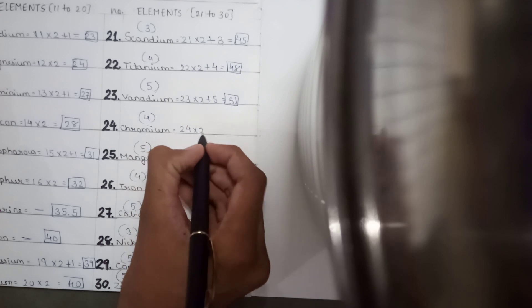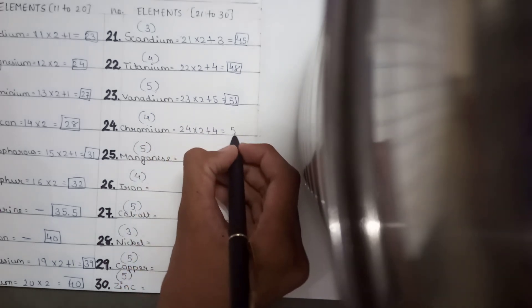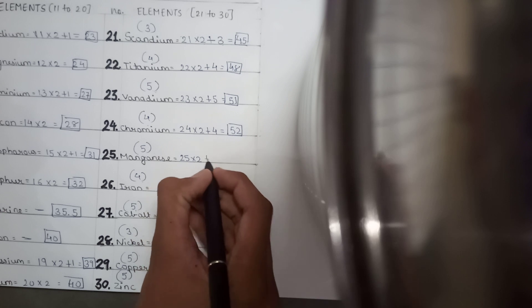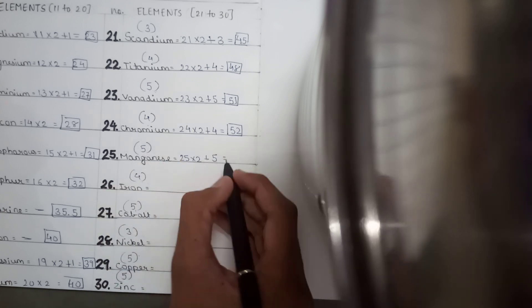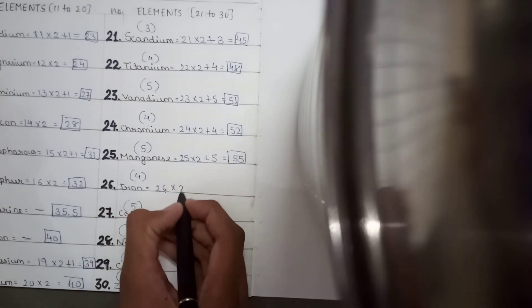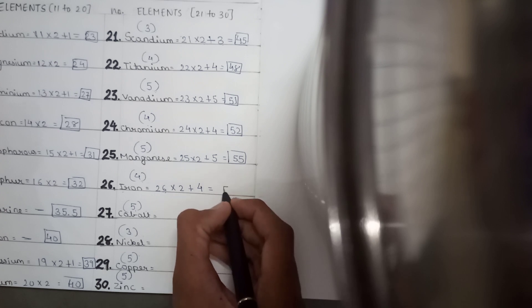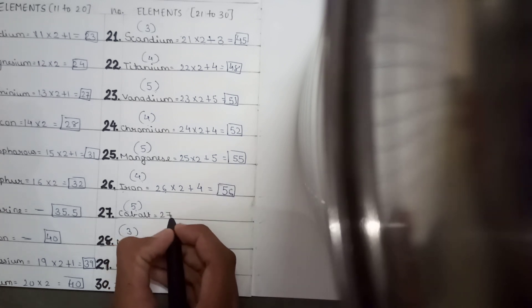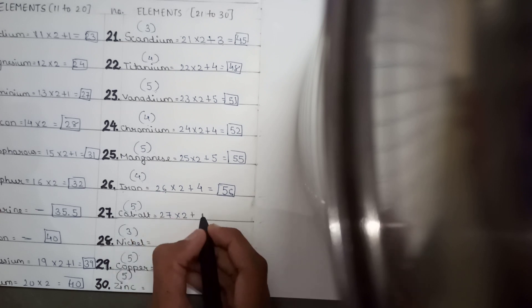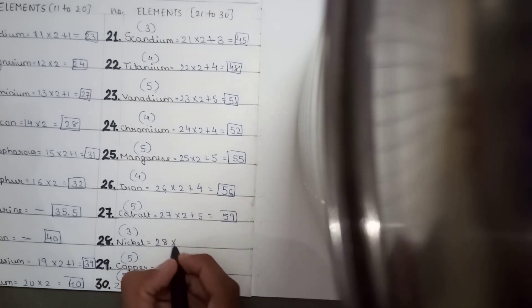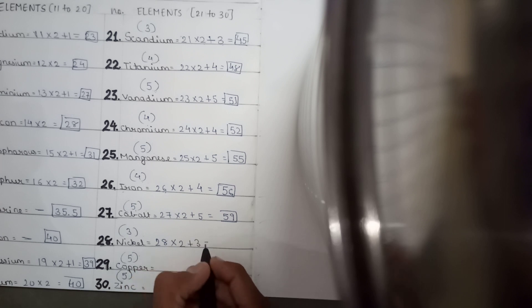For chromium, 24 into 2 plus 4 equals 52. For manganese, 25 into 2 plus 5 equals 55. For iron, 26 into 2 plus 4 equals 56. For cobalt, 27 into 2 plus 5 equals 59. For nickel, 28 into 2 plus 3 equals 59. Note that cobalt and nickel have the same atomic mass.